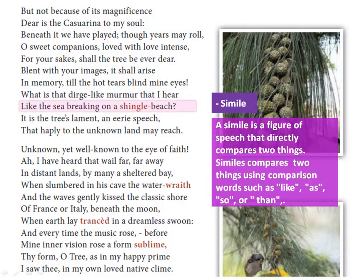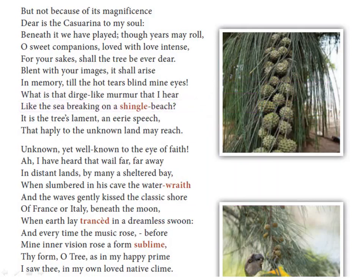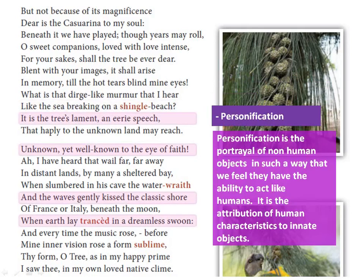The next line, 'it is the tree's lament and eerie speech that happily to the unknown land may reach,' again personifies the tree, whose lament — an unnatural speech — may perhaps reach far places. 'Eerie' means unnatural. The figure of speech used here is personification.